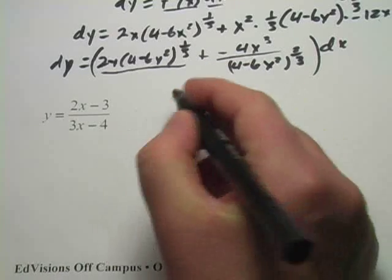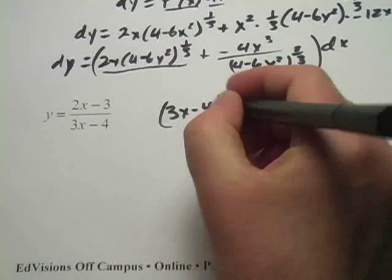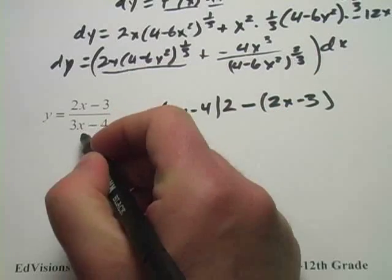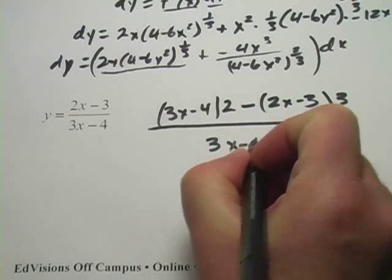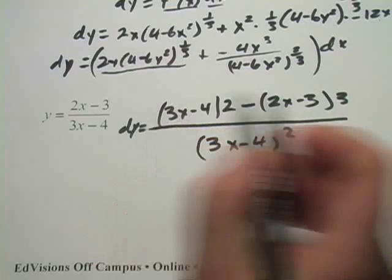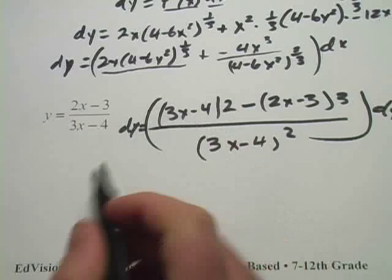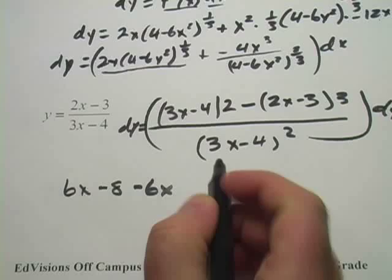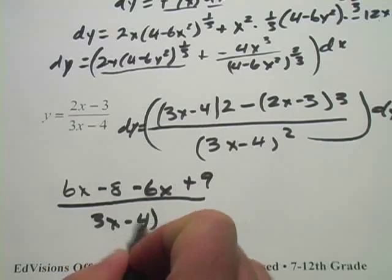Using the quotient rule: low (3x - 4) times derivative of the top (2), minus high (2x - 3) times derivative of low (3), all over low squared (3x - 4)². Now we can simplify. On the top we have 6x - 8 - 6x + 9, all over (3x - 4)².